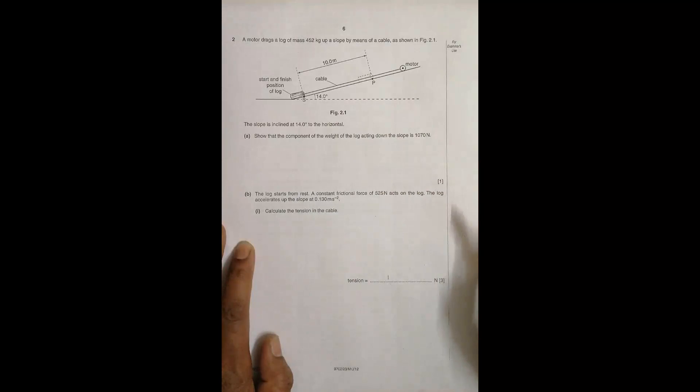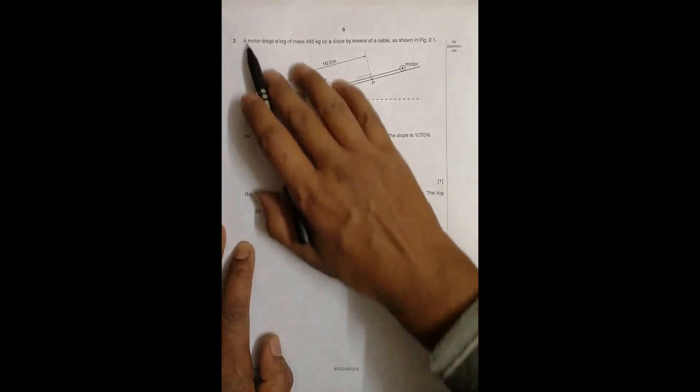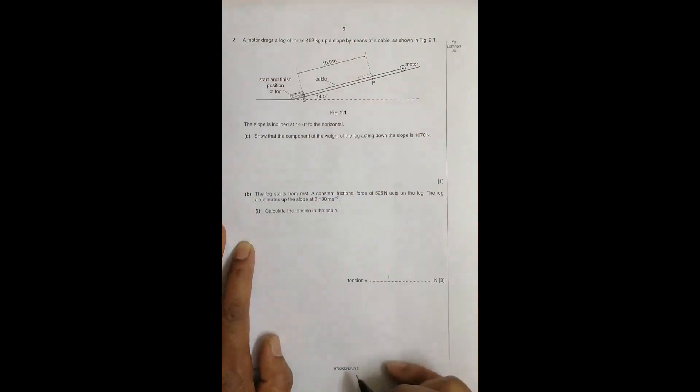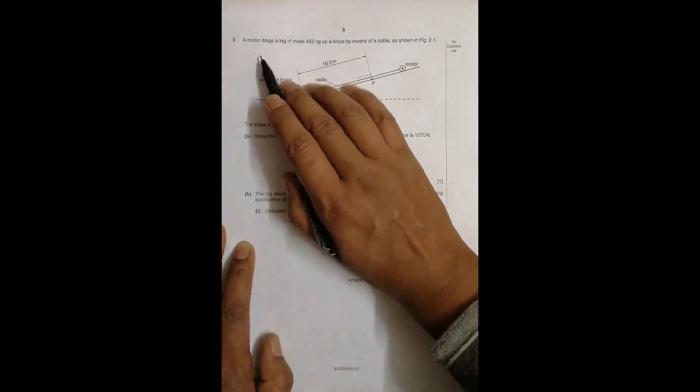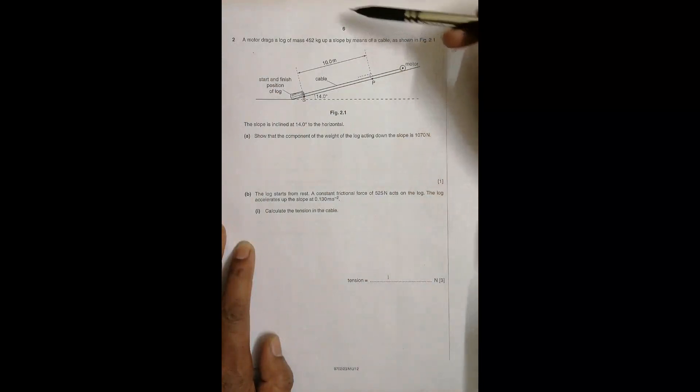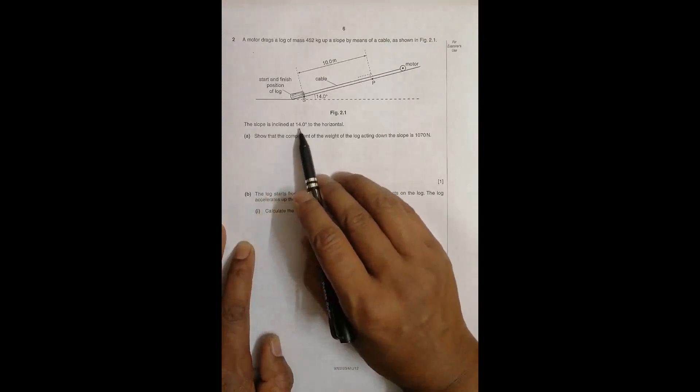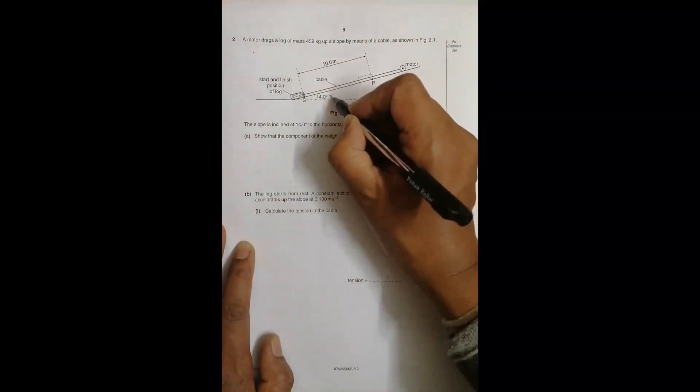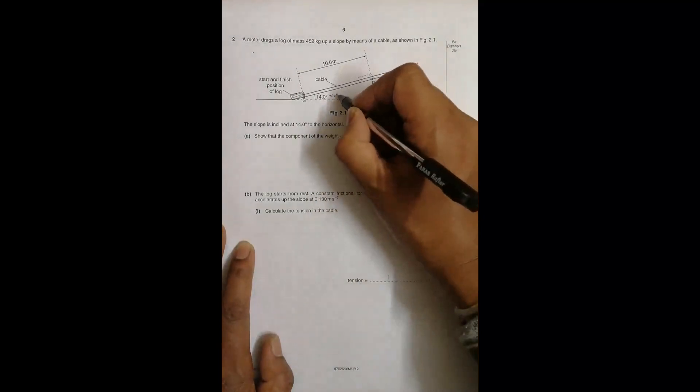He wanted the last part only, but without the initial parts I can't just tell the last one, so I'm doing it from the beginning. It's from the kinematics and forces chapter. It's from May-June Paper 23, question number 2. A motor drags a log of mass 452 kg up a slope by means of a cable.